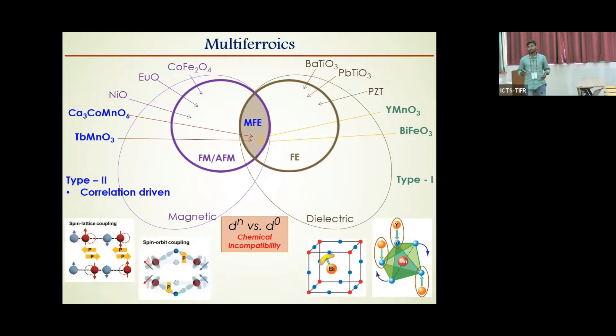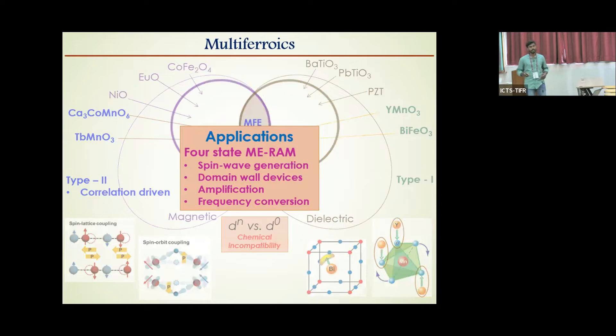Unlike these materials, in type two multiferroics, ferroelectricity originated from certain type of magnetic ordering. For example, magnetic structures like collinear up-up-down-down or non-collinear magnetic structures like cycloidal or conical breaks the inversion symmetry and gives rise to ferroelectricity. With strong magneto-electric coupling, these type two multiferroic materials are promising for applications like four-state magneto-electric random access memory, spin wave generation, domain wall devices, frequency conversion, etc.